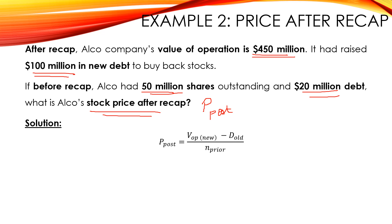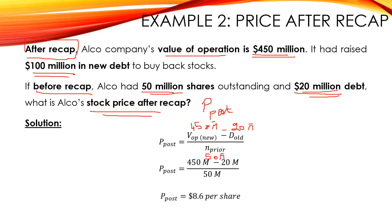As given in the presentation, P post is the value of operations after the recap minus the old debt, over the number of shares prior to the repurchase. The new value of operations after the recap is 450 million. So 450 million minus D old — the old debt was equal to 20 million — divided by N prior, which is the number of shares before the recap: 50 million shares.